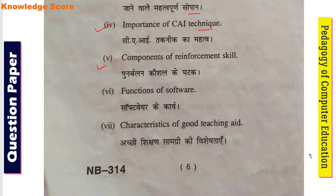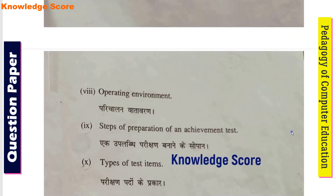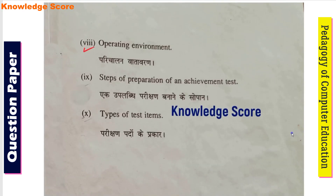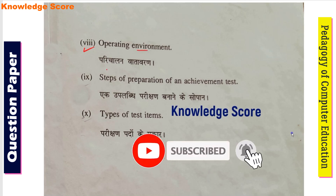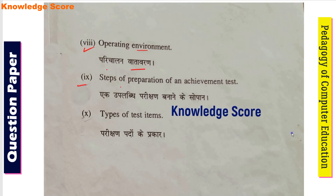Fifth question: components of reinforcement skills. Sixth: functions of software. Seventh: characteristics of good teaching aids. Eighth: operating environment. Ninth: steps of preparation of an achievement test. Tenth: types of test items.